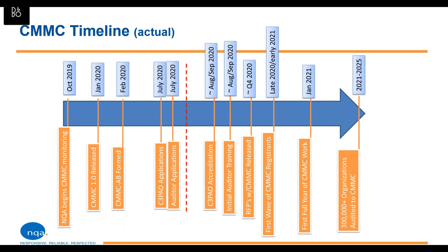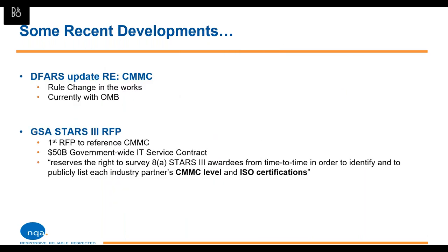As to contracts and the rollout in early 2021 and through the five-year rollout through 2025, that remains really unchanged from the macro level — maybe some minor tweaks to what happens late this year, but big picture it's still very much on track. There are a couple of very recent developments worth mentioning. DFARS currently references the NIST 800-171 self-attestation, so nowhere in the DFARS does it currently reference CMMC, meaning a rules change is needed. We have information that it's currently with the Office of Management and Budget — the cogs are in motion — and I suspect we'll see that within the coming months.